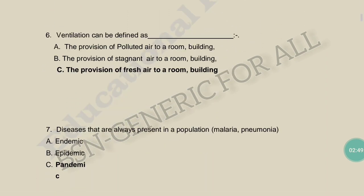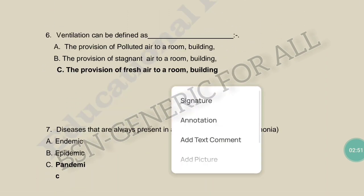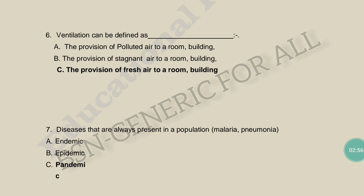Ventilation can be defined as: the provision of polluted air to a room/building, the provision of stagnant air to a room/building, or the provision of fresh air to a room. Ventilation means if a room has windows, polluted indoor air can go out and fresh air can come in — this is called ventilation.